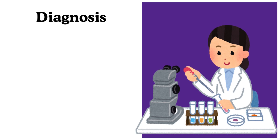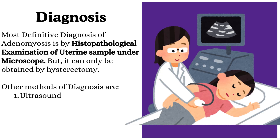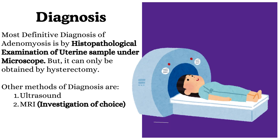Diagnosis: the most definitive diagnosis of adenomyosis is by histopathological examination of a uterine sample under microscope. But it can only be obtained by hysterectomy. Other methods of diagnosis are ultrasound and MRI, which is the investigation of choice.